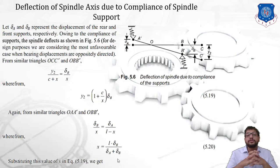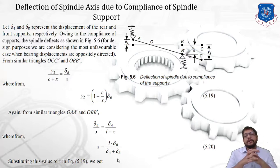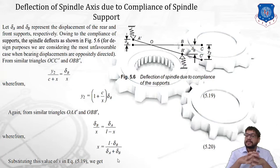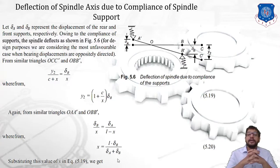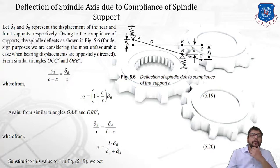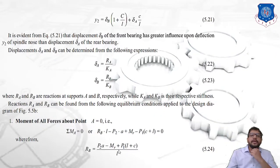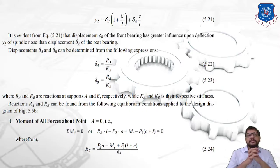From equation 5.9, y2 can be expressed as y2 = (1 + c/x) × δ_b. From similar triangles OAA' and OBB', we get δ_b / x = δ_a / (L − x), from which x = L × δ_b / (δ_a + δ_b), called equation 5.20. Substituting equation 5.20 into equation 5.19 yields: y2 = δ_b × (1 + c/L) + δ_a × (c/L), which is equation 5.21.